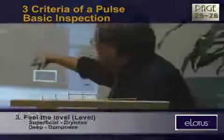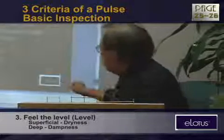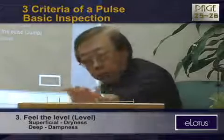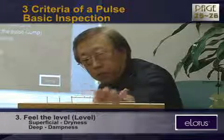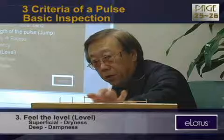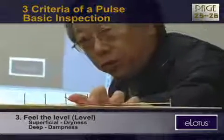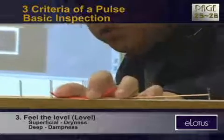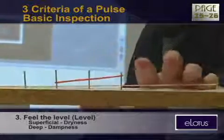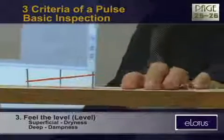Feel the level - superficial is strong. When you take the pulse, you should do it lightly. When you touch, this is the skin - you gently put your fingers on top of the skin, then gradually put pressure on top and press down. See the rebound. No rebound means weakness. It rebounds back - that's strong. Too strong means too sick.